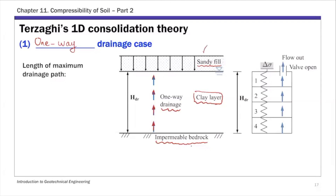In the one-way drainage setup, the bottom is impermeable and the top is permeable. The parameter HDR is a very important parameter — it is the length of the maximum drainage path. For one-way drainage, HDR equals the thickness of the consolidating layer, because the water at the bottom of this layer has to travel HDR to reach the permeable layer.